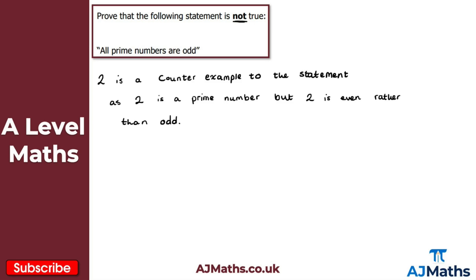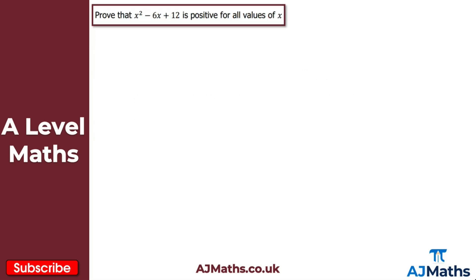Moving on to the final method of proof: proof by deduction. This is a method where a statement is shown to be true using well-established mathematical principles — very similar to proof questions you'd have covered in GCSE maths. The question says: prove that x squared minus 6x plus 12 is positive for all values of x.